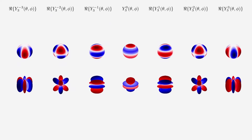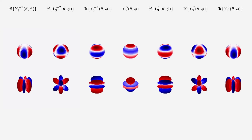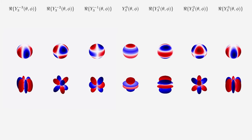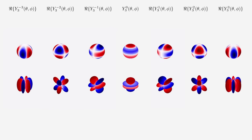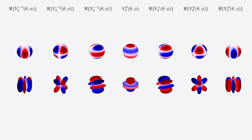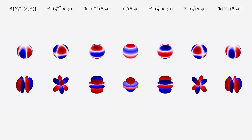Finally, here is the comparison of both plotting approaches for the real parts of the L=3 spherical harmonics: Y3,−3, Y3,−2, Y3,−1, Y30 (phi-independent), Y31, Y32, and Y33, all shown rotating for ease of visualization.